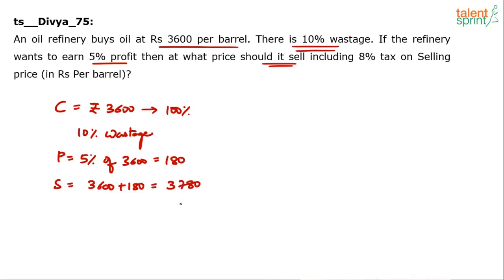This 3780 is the selling price only for 90%, because 10% is wasted. Whenever you do calculations for profit and loss, the quantity considered for cost price and the quantity considered for selling price both have to be the same.